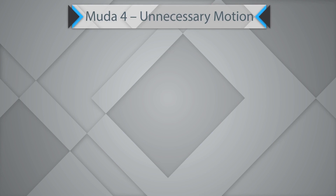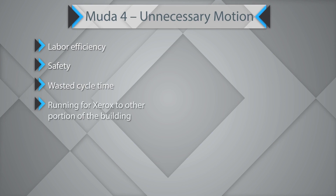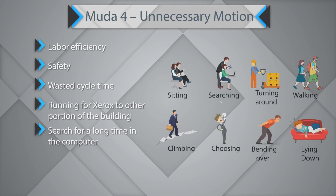The fourth waste is unnecessary motion. It could impact labor efficiency and safety, and results in wasted cycle time. Examples include running for Xerox from one portion of the building to another, searching for a long time on a computer, sitting, searching, turning around, walking, climbing, choosing, bending over, and lying down — all examples of unnecessary motion. You must implement 5S and identify what tools and inputs are required at what periodicity and make arrangements. Treat operators as surgeons — everything must be within reach.